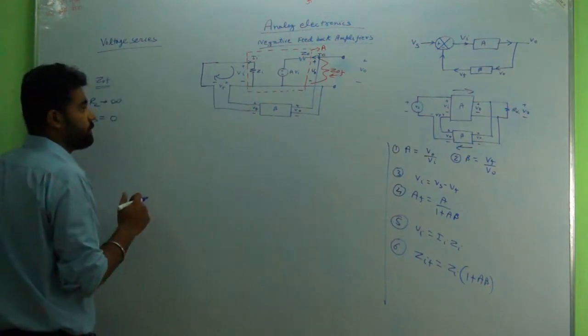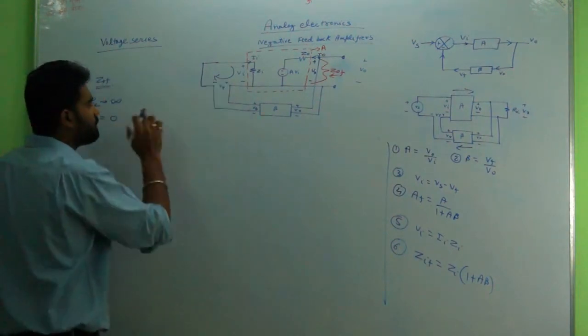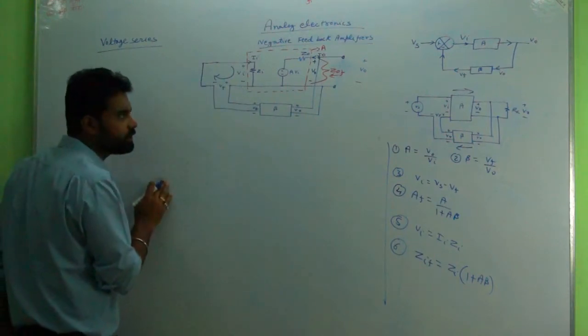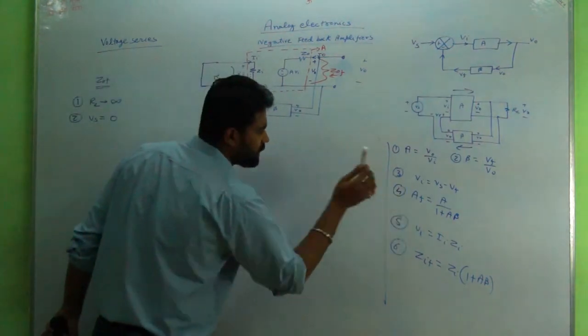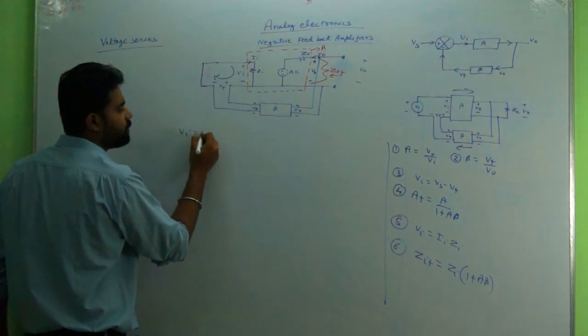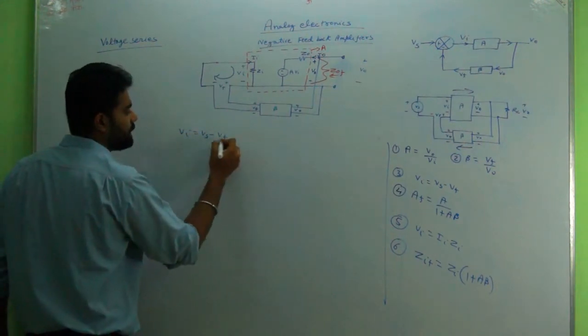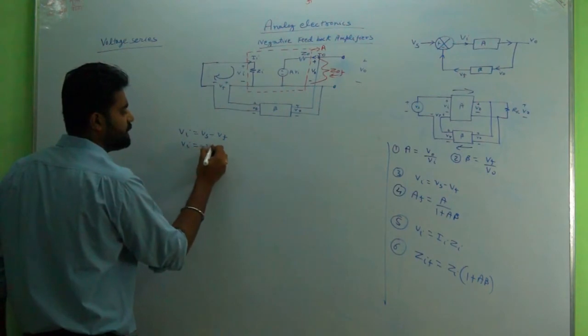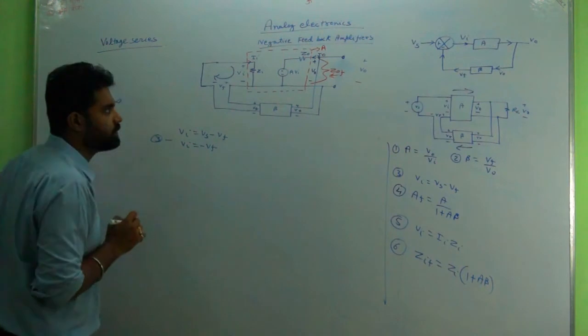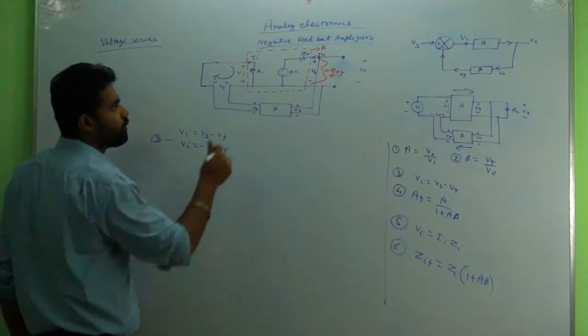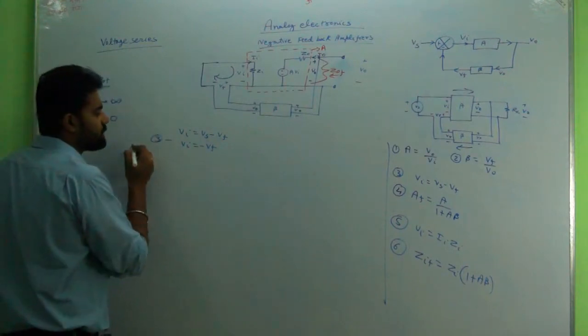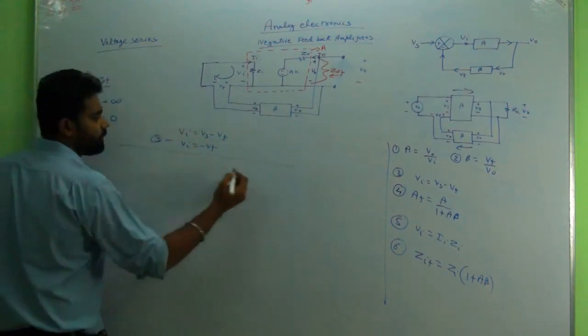Now as we have introduced these two conditions, what are the effects? It will obviously affect condition number three, that is Vi equals Vs minus Vf. Now it is Vi equal to minus Vf. This is one condition that is basically changing. We'll start with the derivation now.